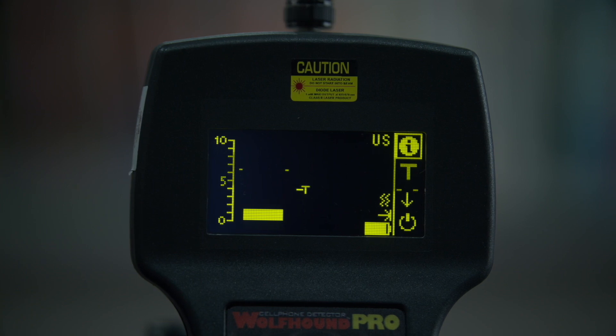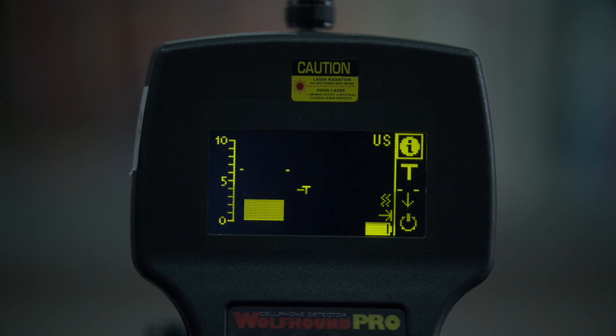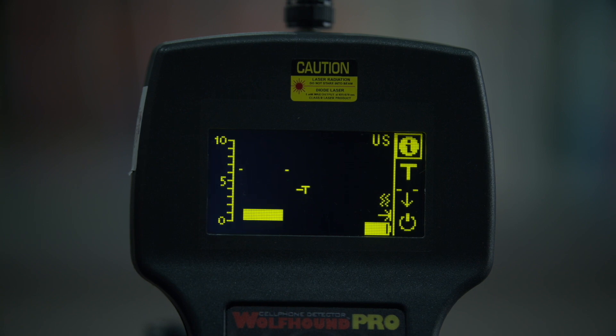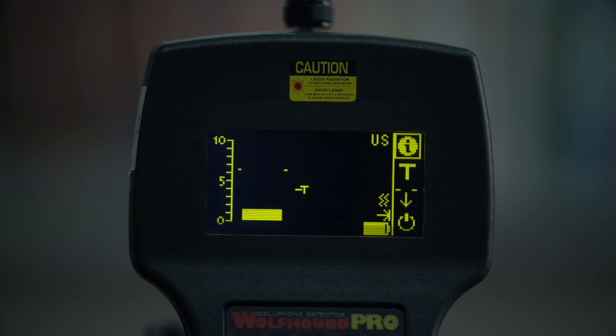The time between the beacons varies and can be once every 30 seconds to once every 10 minutes. Let's go over how to effectively use the Wolfhound Pro starting at the guard station.